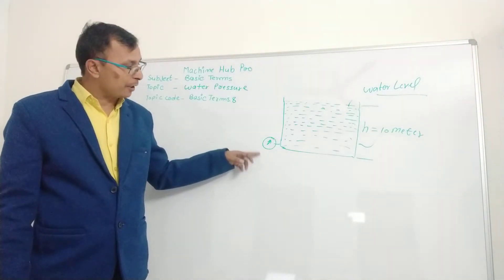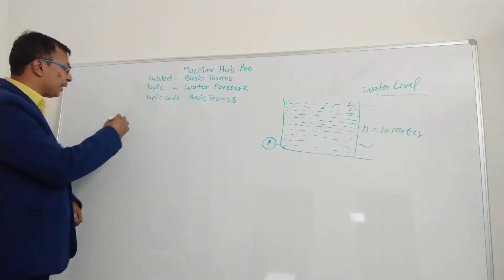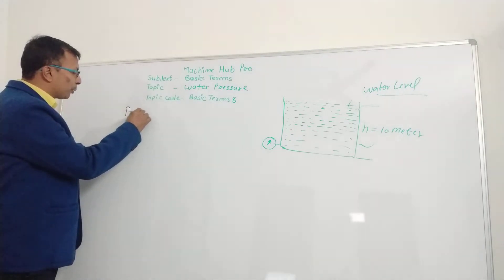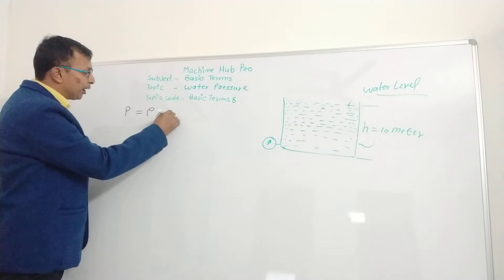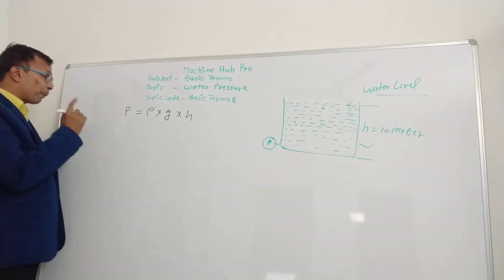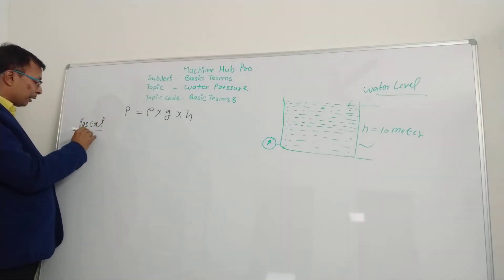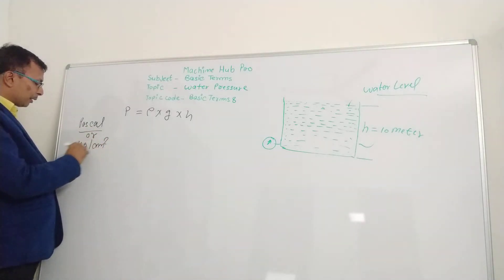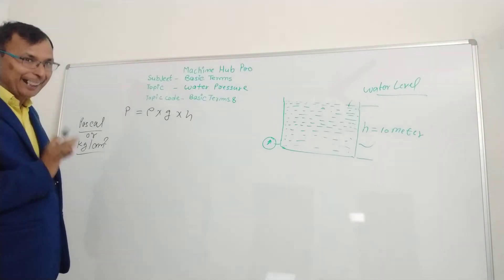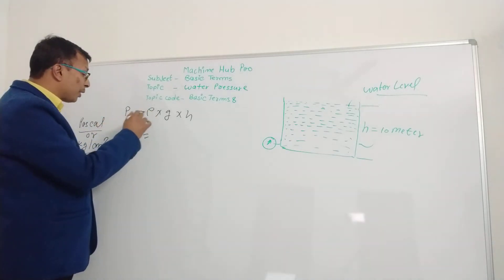Let us see the formula: P = ρ × g × h, where P is the pressure in Pascal or kg per centimeter square. What is ρ? ρ is the density.